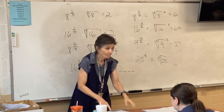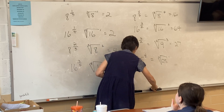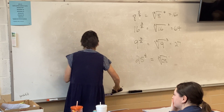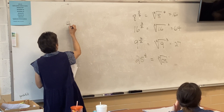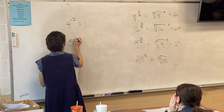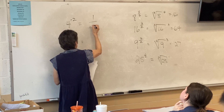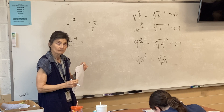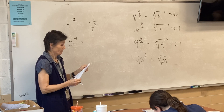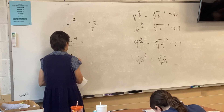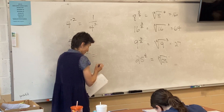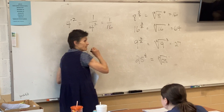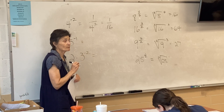Next section — same idea, now negative exponents. Who remembers how to deal with four to the negative second? Negative exponents mean one over. So the answer is one over four squared, which is one over 16.